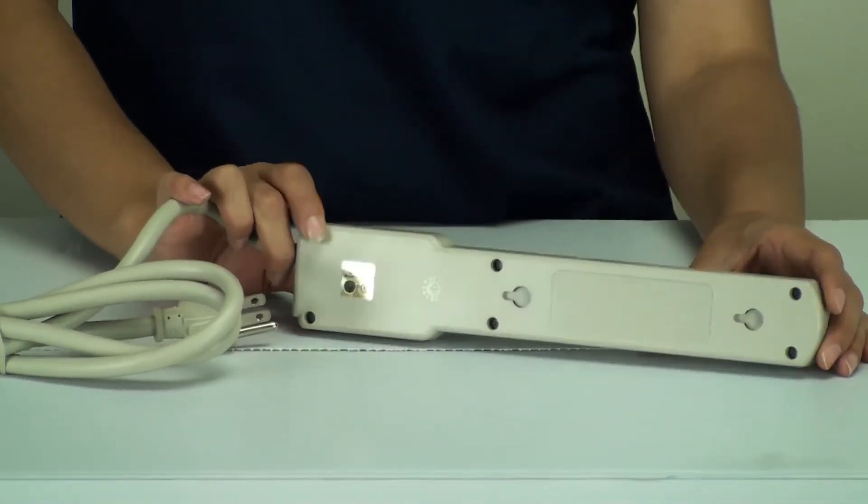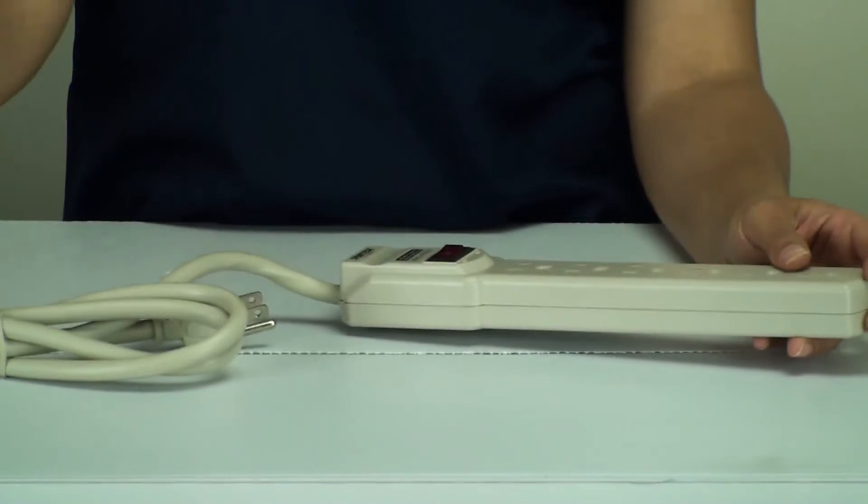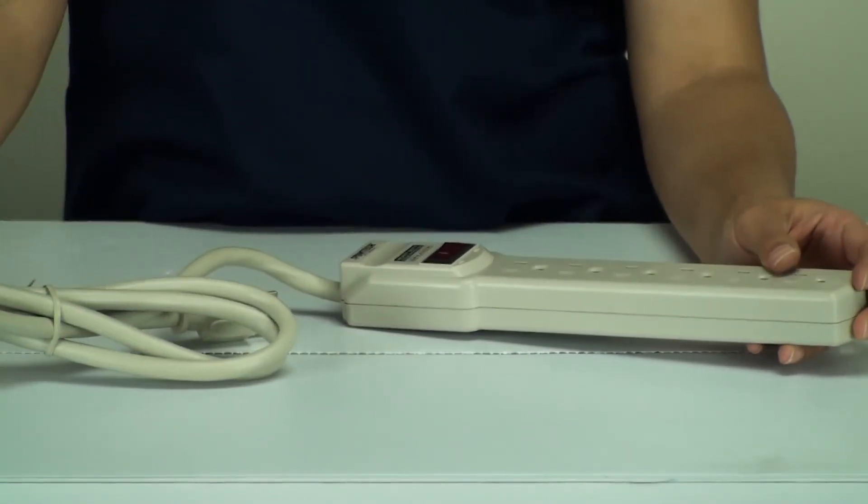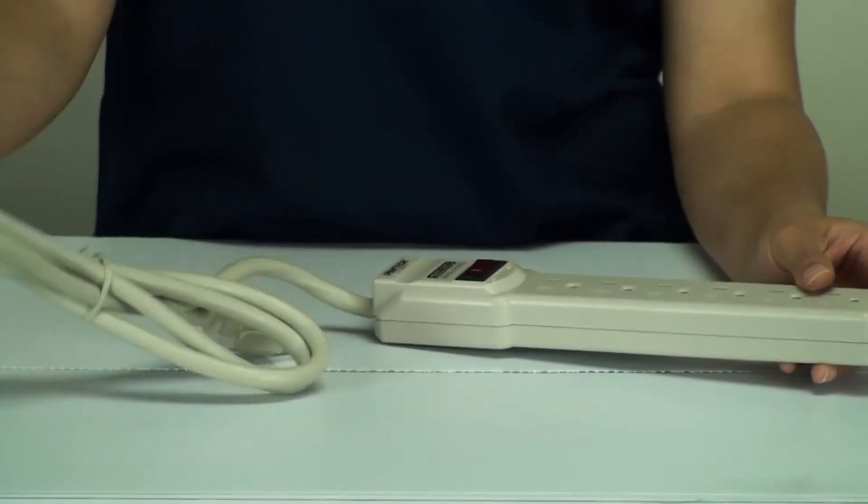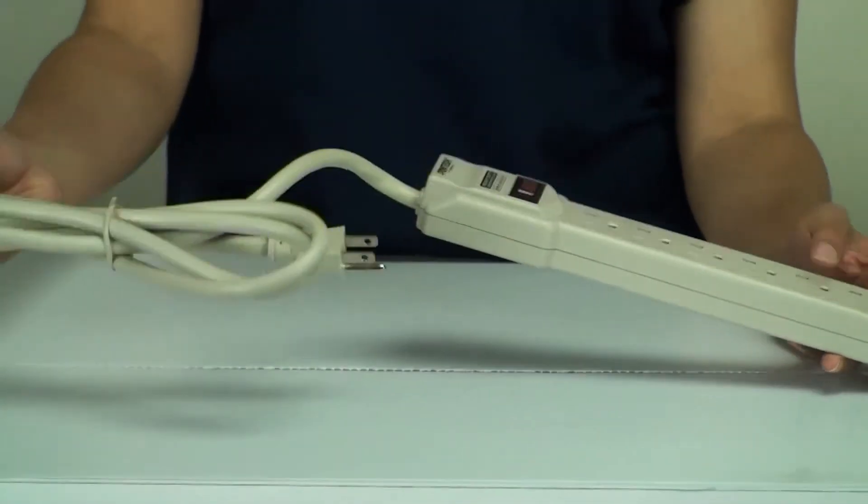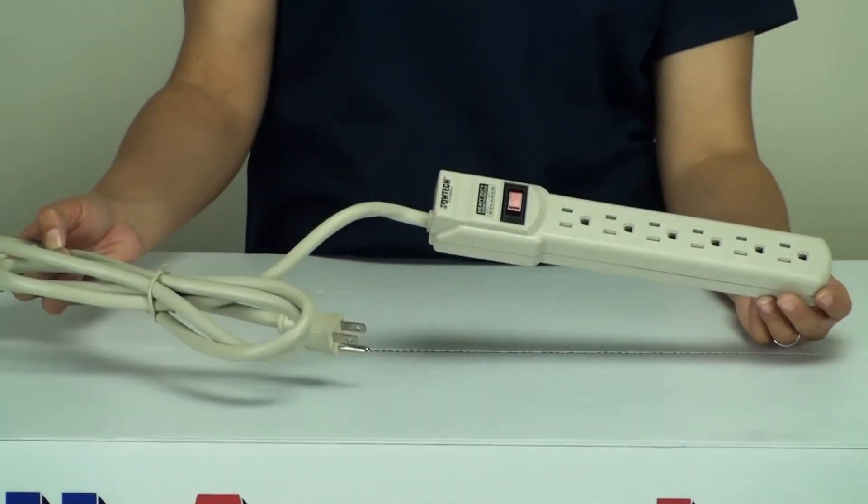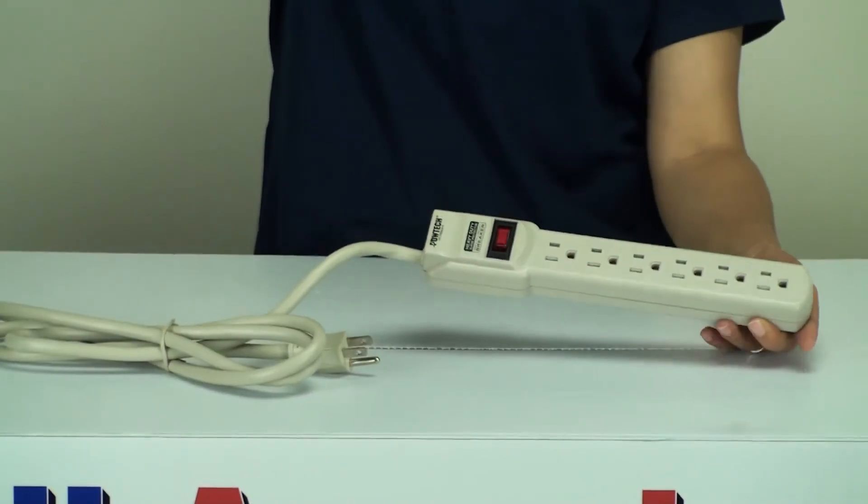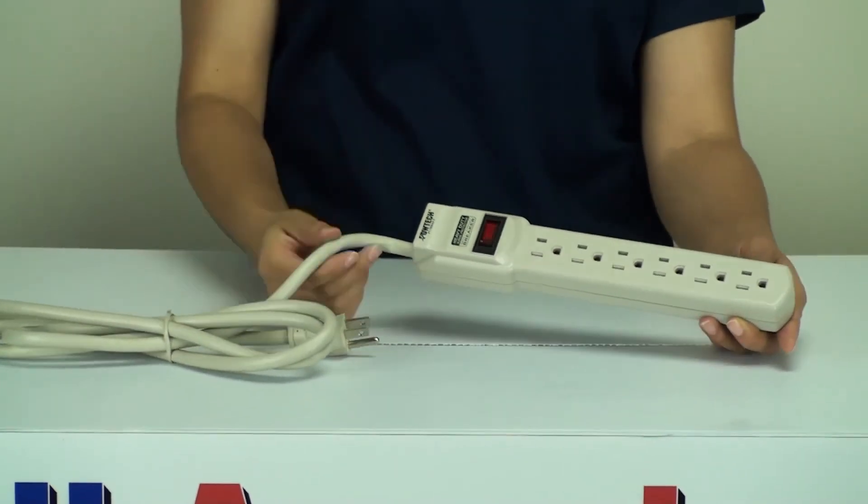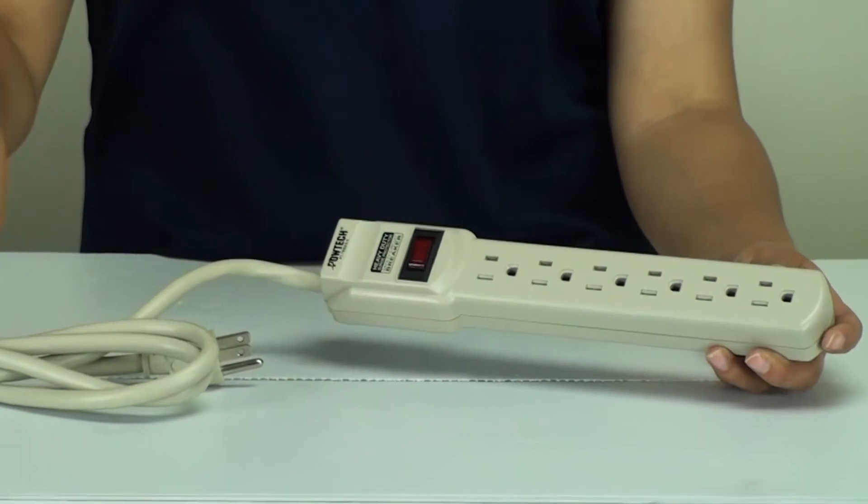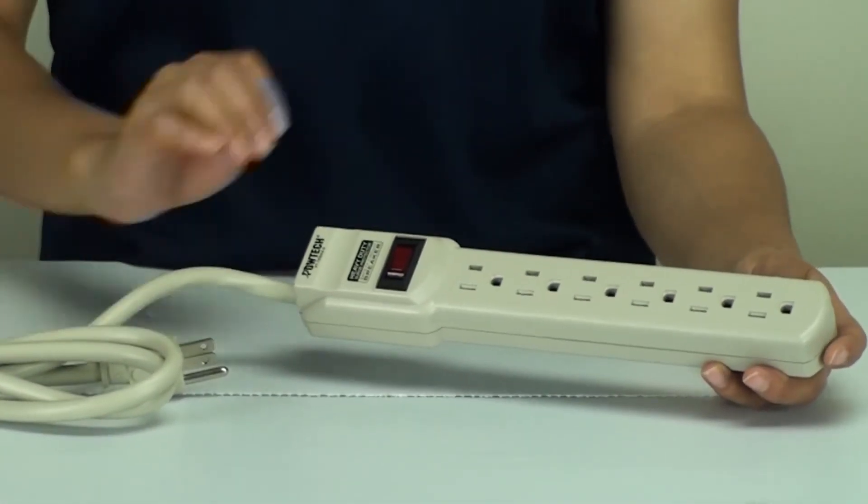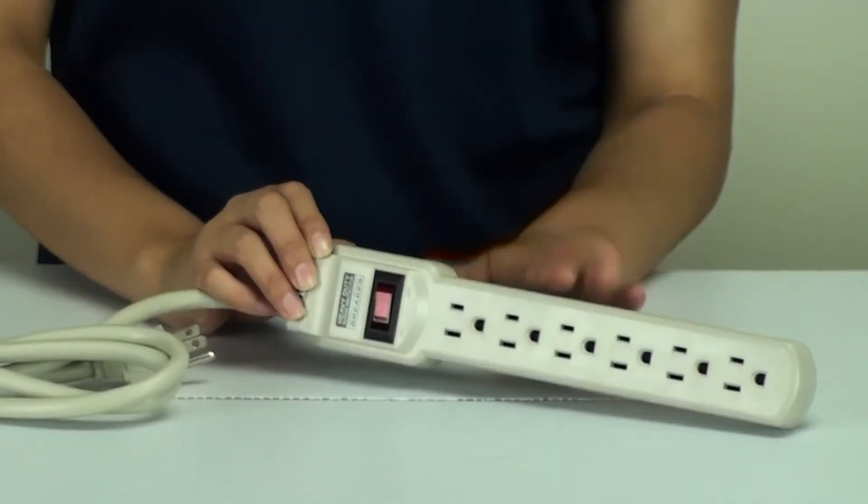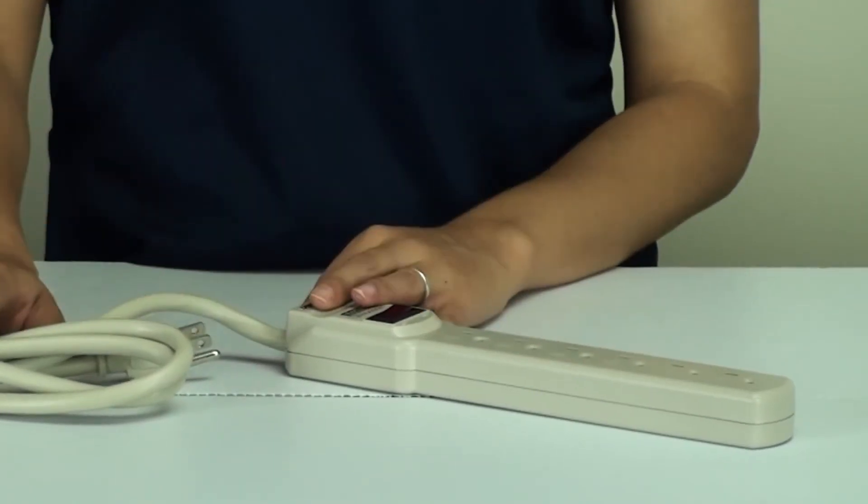The cord itself is about 6 feet long and this is a heavy duty surge protector. It takes a maximum of 125 volts and 15 amps. You don't want to go past that amount because it will cause your power surge protector strip to fail.